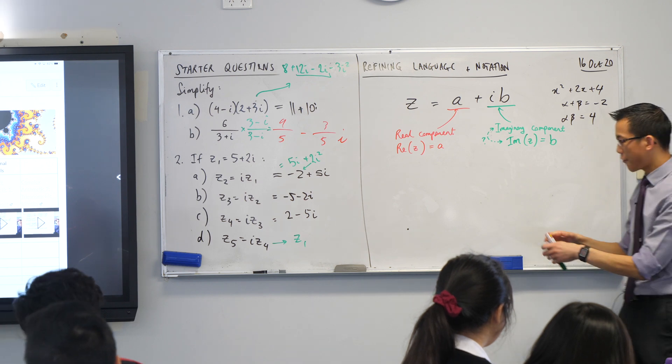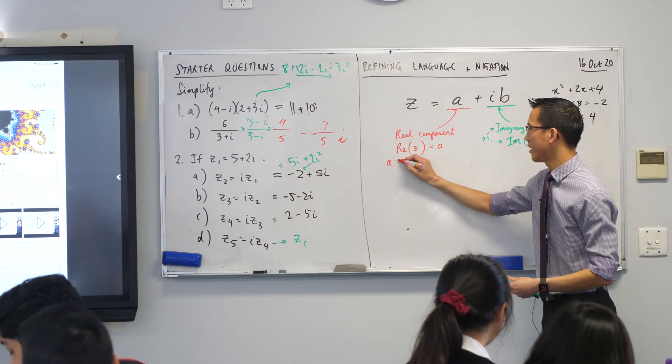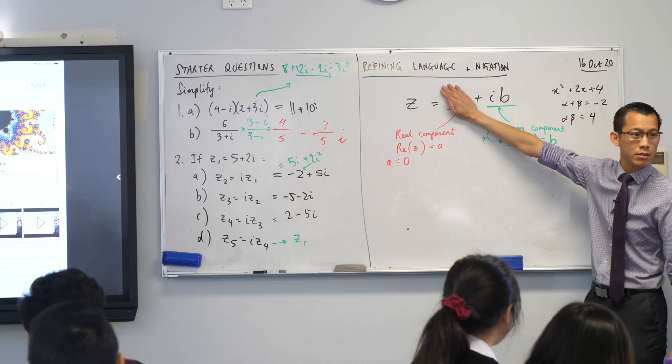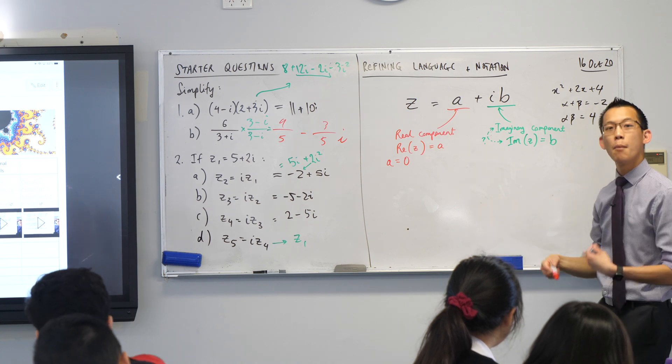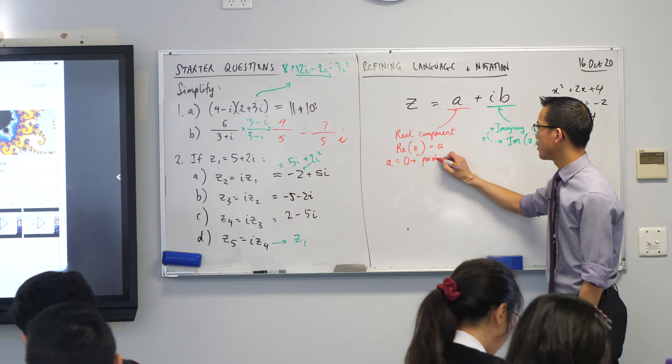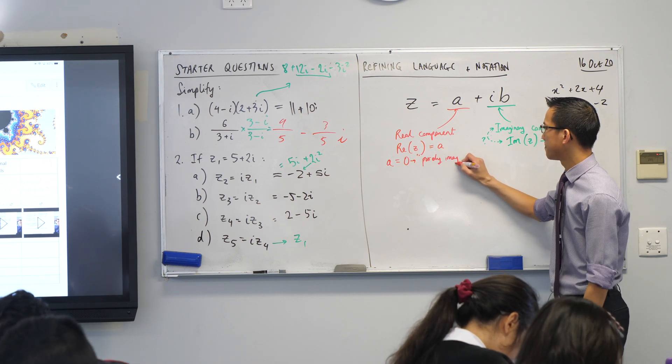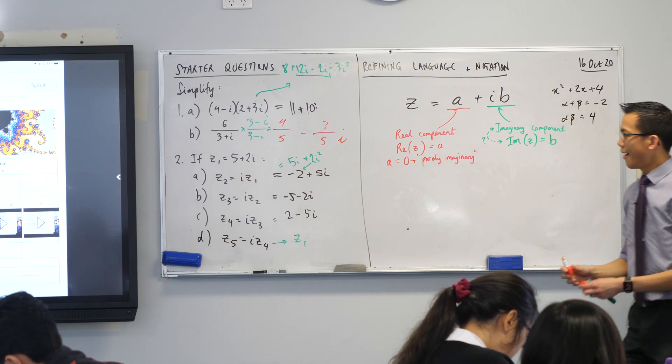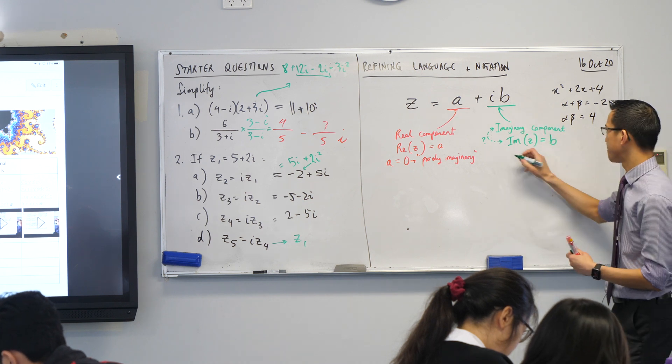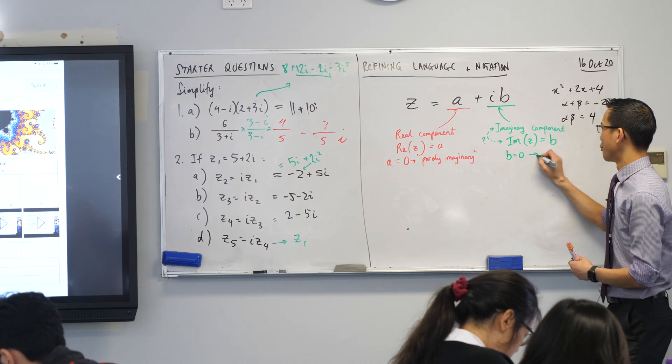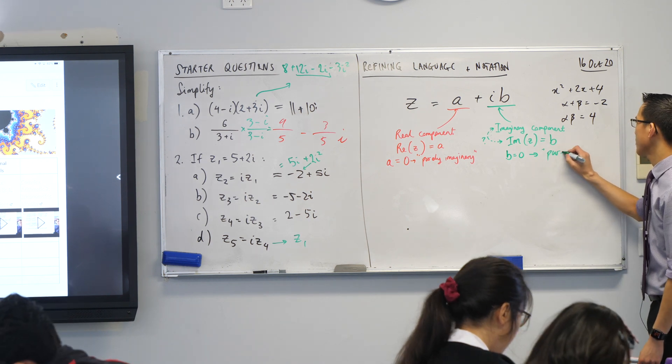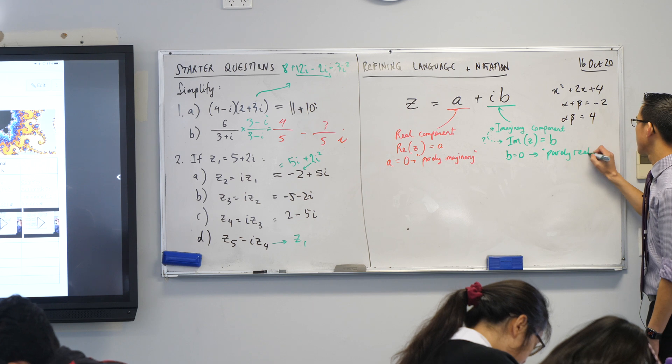So that follows that if I say the real component here, if that's zero, what that means is you've just got this part here. Do you agree with that? If that's zero? So we would call this a purely imaginary number. A purely imaginary number, because there's no real component. And in just the same way, if this guy, if b is zero, then what do you think we call that? Not purely imaginary, it's purely real.